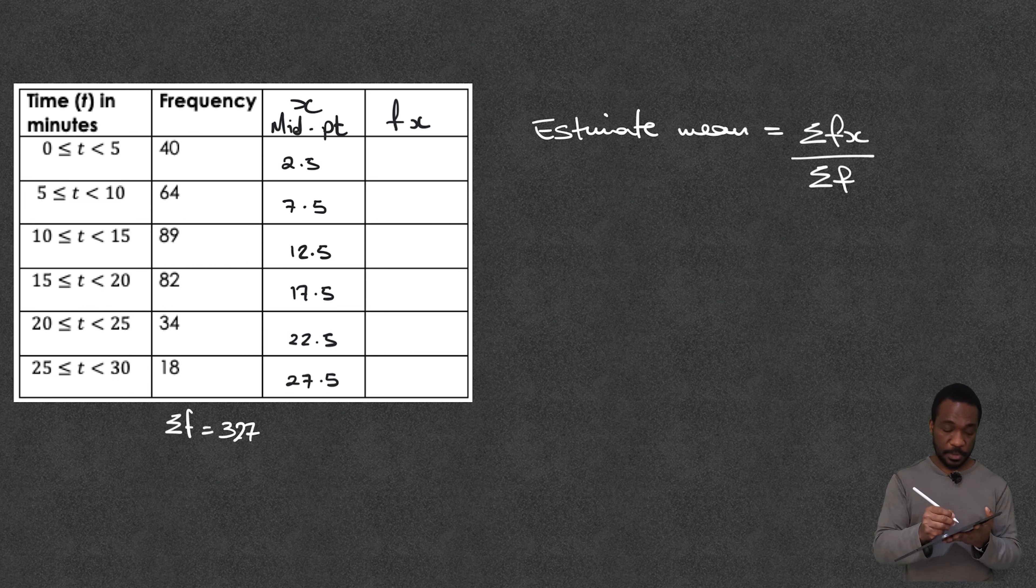So 40 times 2.5, that's going to be 100. You know what? You know what I'm doing here. So I'm just going to fill out the rest of the table.